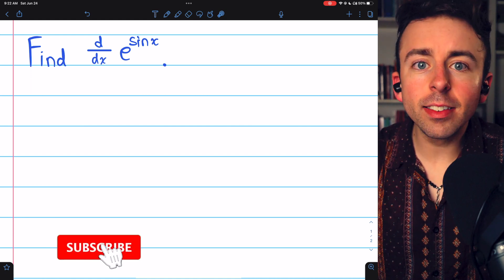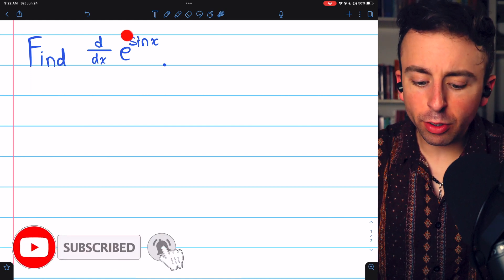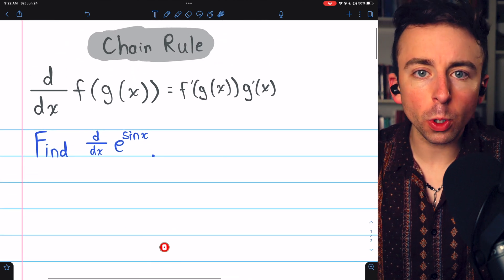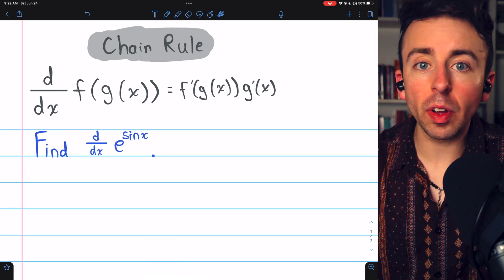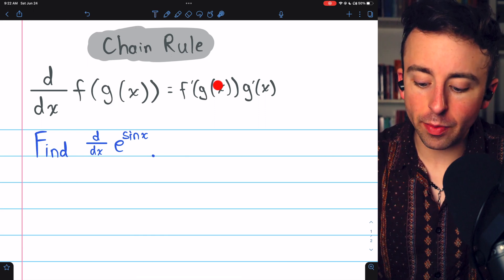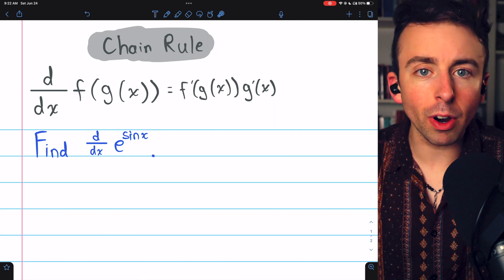e to the sine x is a composite function. So to take its derivative, we're going to need to use the chain rule, which tells us the derivative of a composite function f of g of x is f prime of g of x times g prime of x.